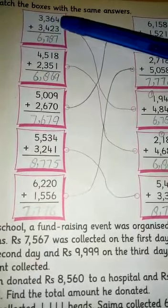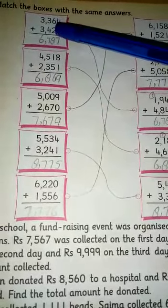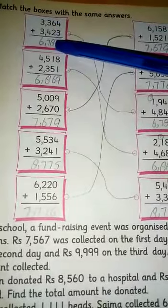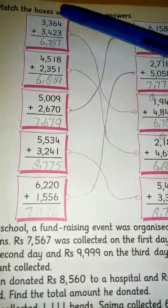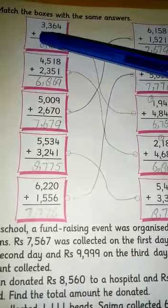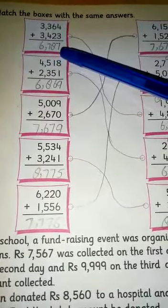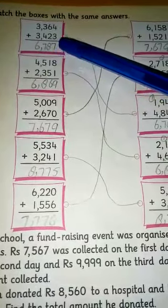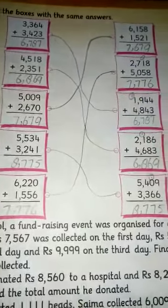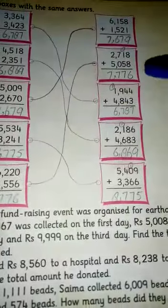3,364 plus 3,423. Like here we have the answer 6,787. This is what you want to see here. Where is the same answer?